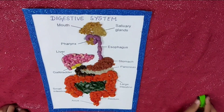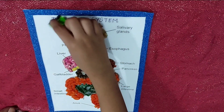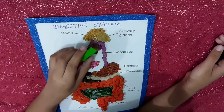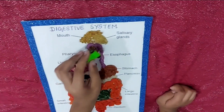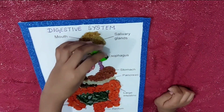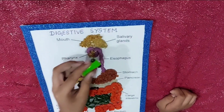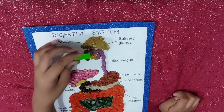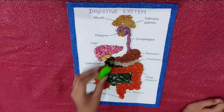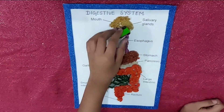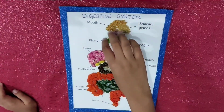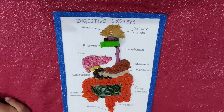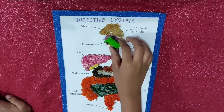The process of digestion begins from the mouth. The teeth help in biting, chewing, and breaking the food into smaller pieces. The saliva in the mouth gets mixed with the food and makes it soft. Then it enters the food pipe, which is also called the esophagus.